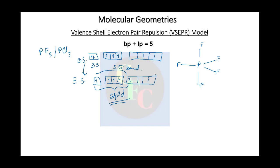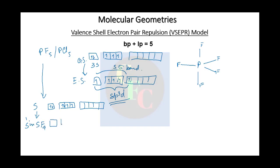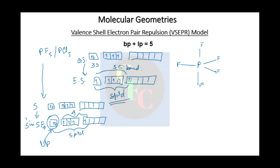Now we are more interested in putting lone pairs in and seeing how they affect geometries. The next element to phosphorus is sulfur. In SF4, by the formula alone we see there can be a maximum of four sigma bonds, so we need four unpaired electrons. The hybridization is sp3d, and now we have one lone pair and four sigma bonds with fluorines.